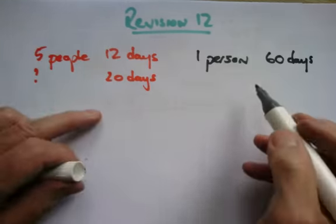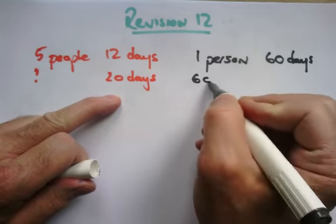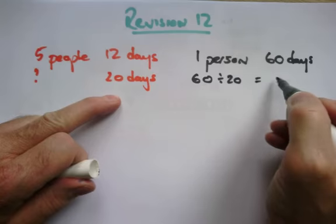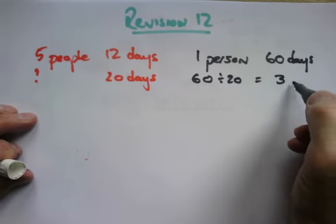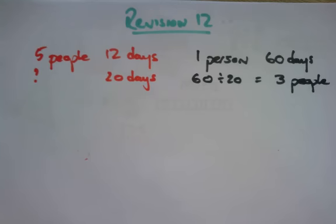Now if that needs to be done in 20 days, how many twenties are in 60? Three. I'd need three people. Okay, it's a nice way of doing this.